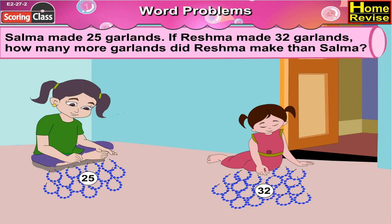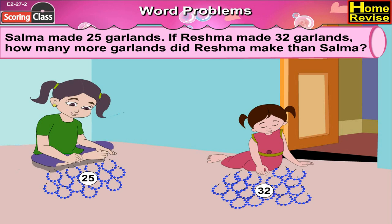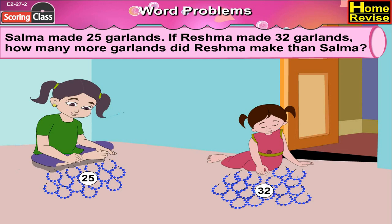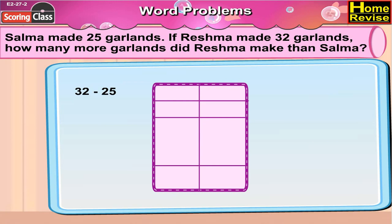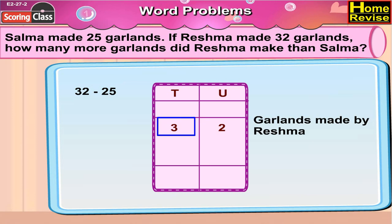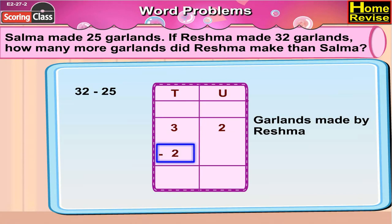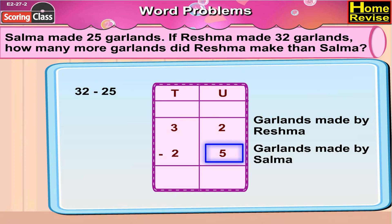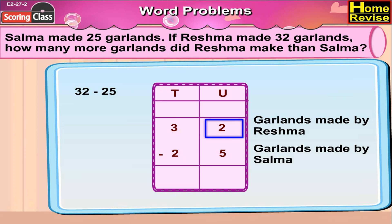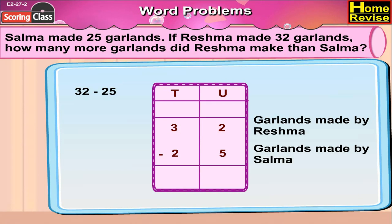In order to find how many more garlands Reshma made than Salma, we have to subtract the garlands made by Salma from those made by Reshma. That would be 32 minus 25, or 3 tens 2 units minus 2 tens 5 units. 5 cannot be subtracted from 2, so we untie 1 ten from 3 tens — that gives 2 tens and 12 units.